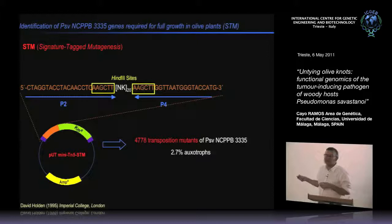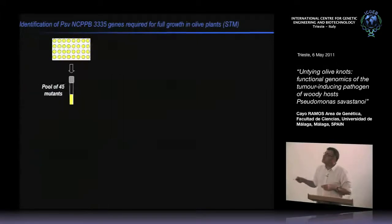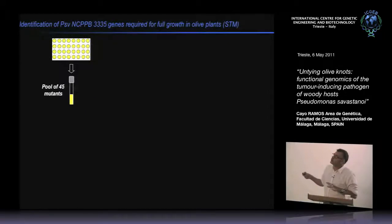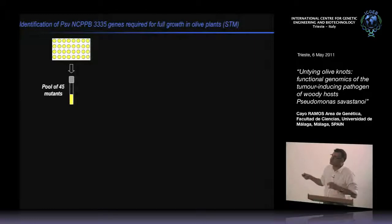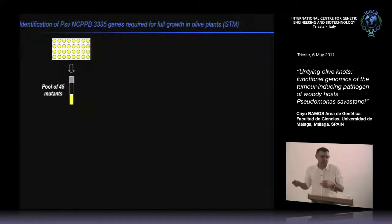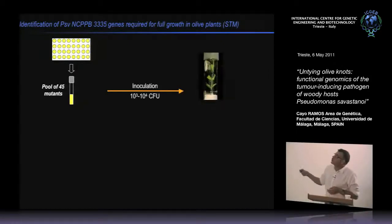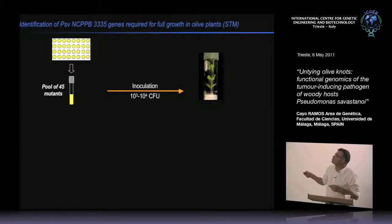2.7% of the mutants were auxotrophs, as expected. The mutants are conserved on ELISA plates, and we inoculate pools of approximately 45 mutants, first grown independently then mixed just before inoculation, into the in vitro olive plant system. Growing them independently ensures that a slower-growing mutant is equally represented in the pool at inoculation.